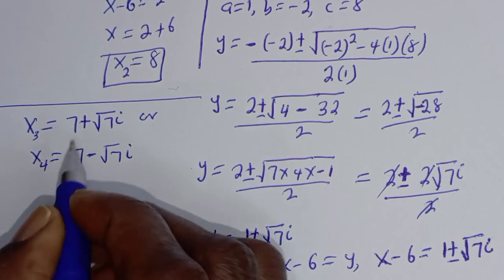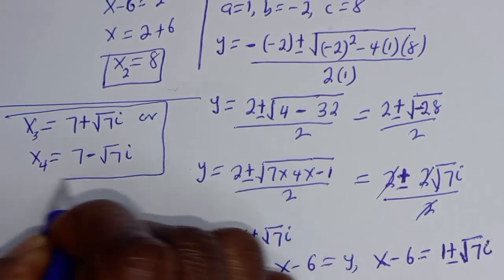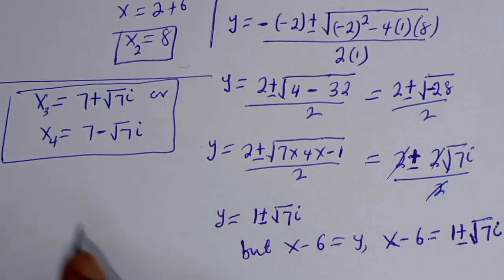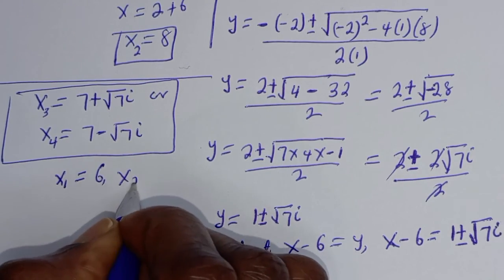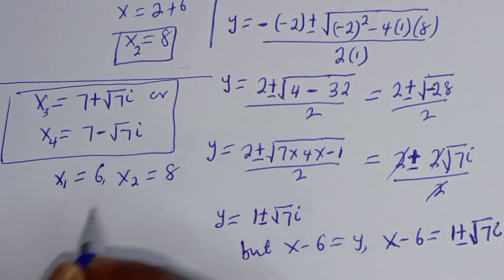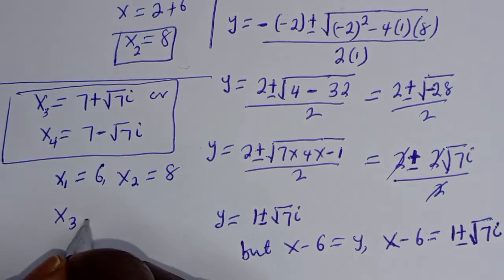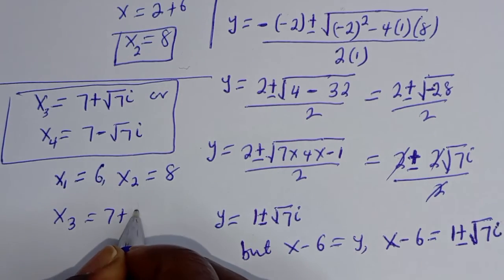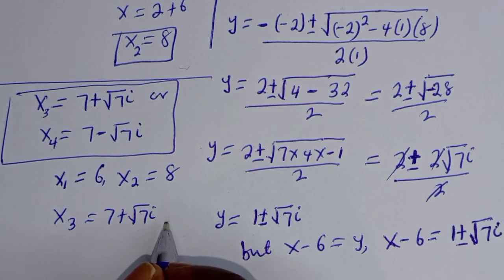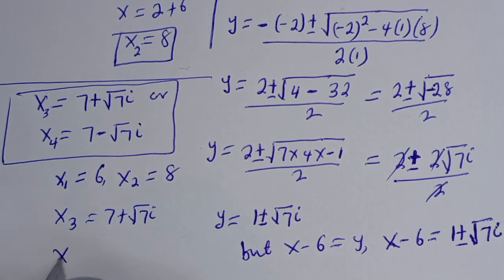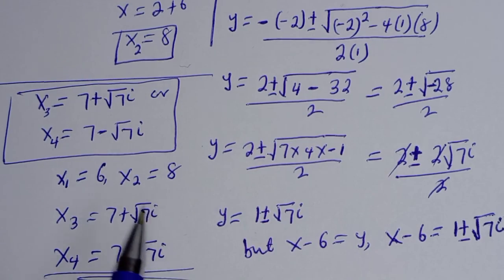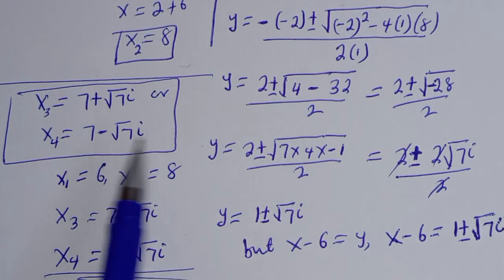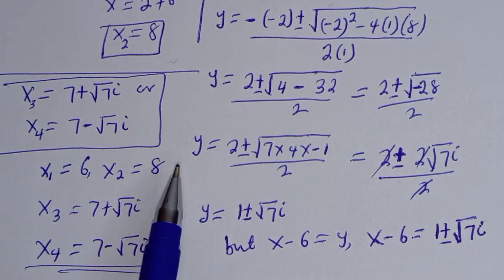So our final answers are: x₁ equals 6, x₂ equals 8, x₃ equals 7 plus √7 i, and x₄ equals 7 minus √7 i. If you enjoyed the video please don't forget to like, share, comment and subscribe. Thank you, bye bye.